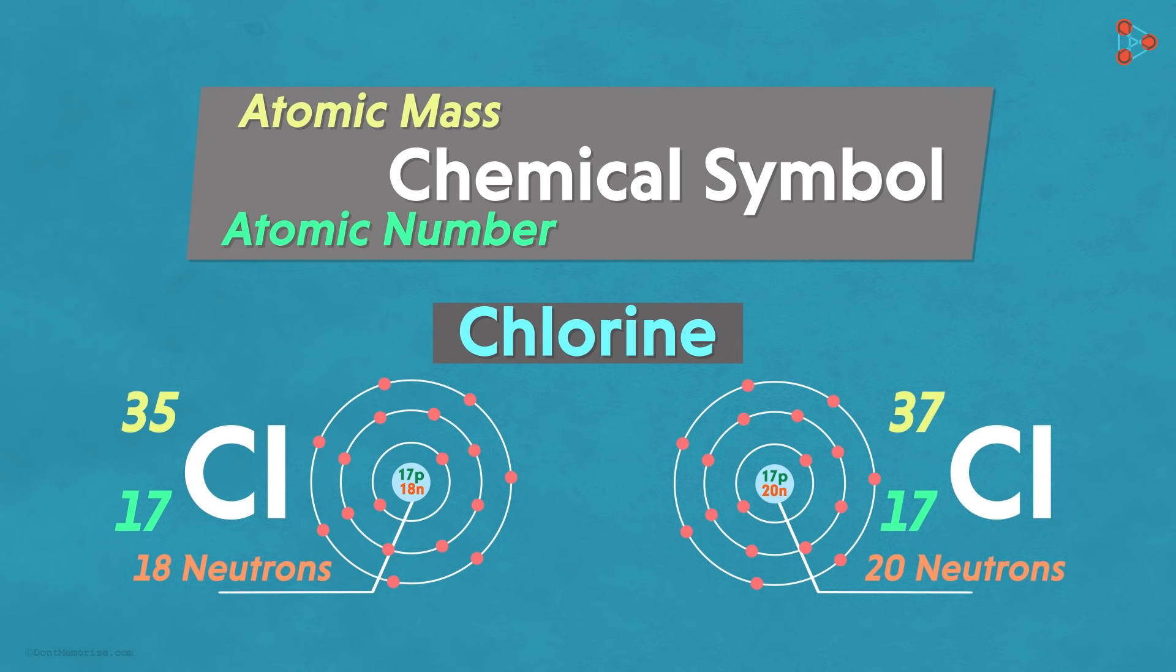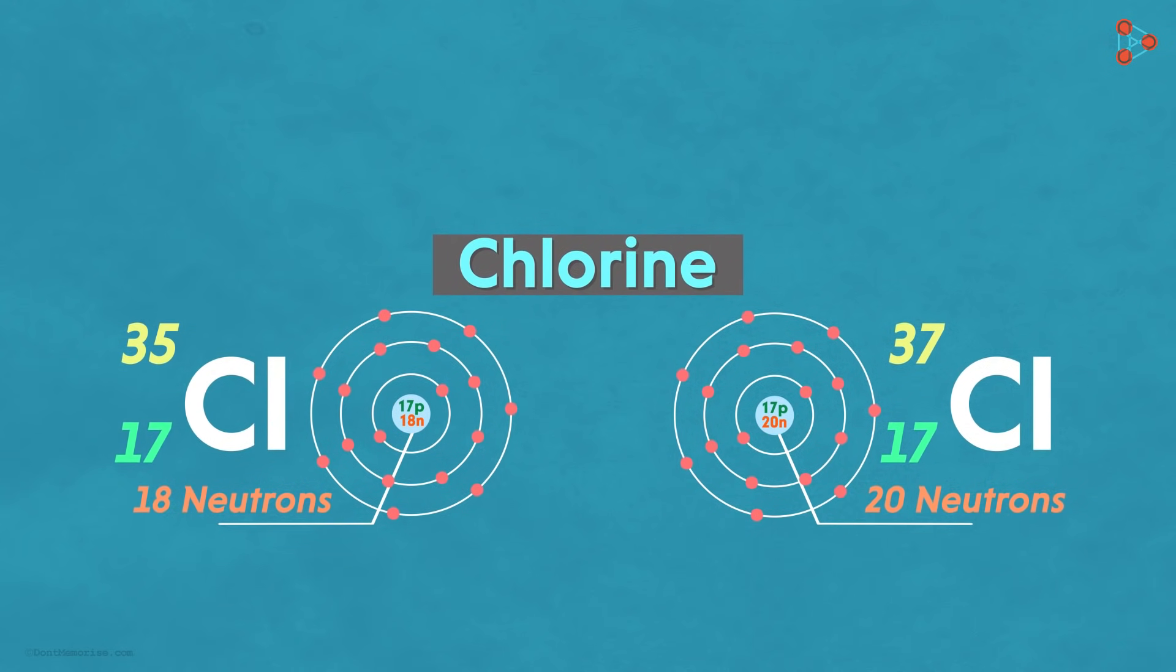However, we now need to understand what exactly that is. There are many such cases where atoms of the same element exist in different forms. These forms are called the isotopes.